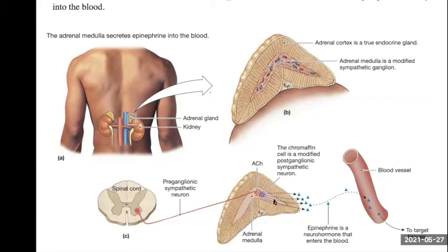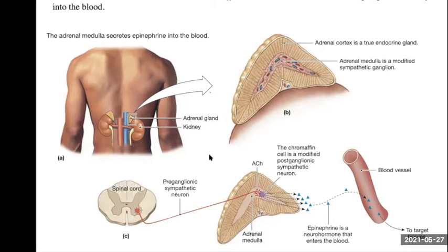This is an unusual situation because these are modified postganglionic sympathetic neurons releasing adrenaline instead of noradrenaline. Your book says it also releases noradrenaline, but don't worry about that — we'll just go with epinephrine, since that book is the only one that says that. So: epinephrine released from the adrenal medulla.